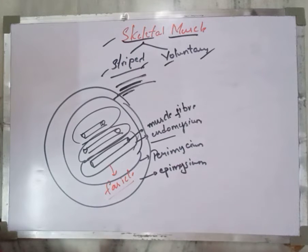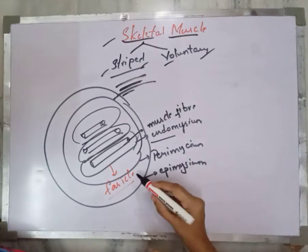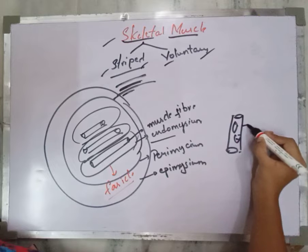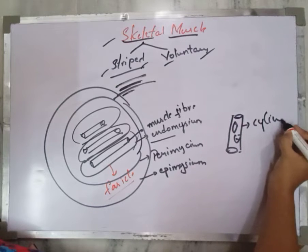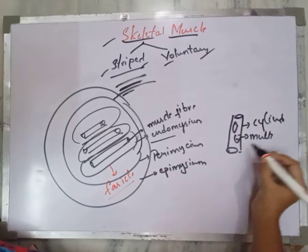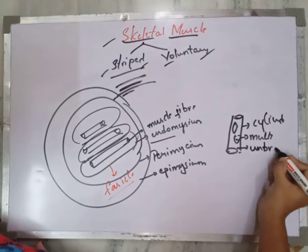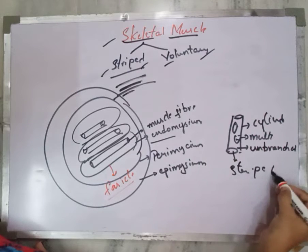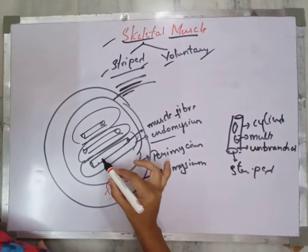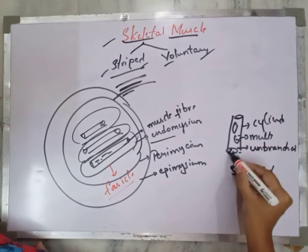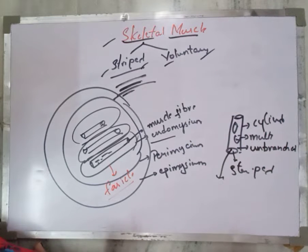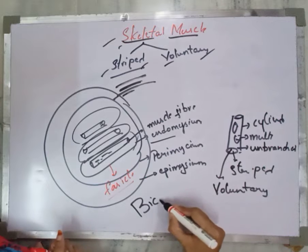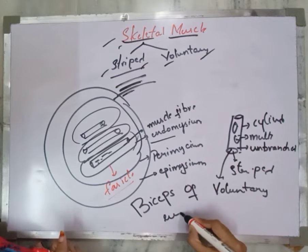The skeletal muscle is made up of cylindrical-shaped muscle fibers that contain multiple nuclei — hence the skeletal muscle fibers are cylindrical, multinucleated, and unbranched. They are called striped muscle because the myofibrils in the sarcoplasm show alternate light and dark bands. Since it works under the control of the organism it is also known as voluntary muscle. An example location of skeletal muscle is the biceps of the arms.